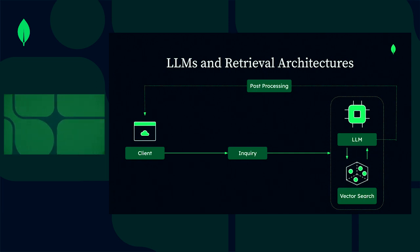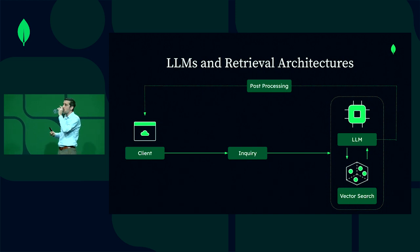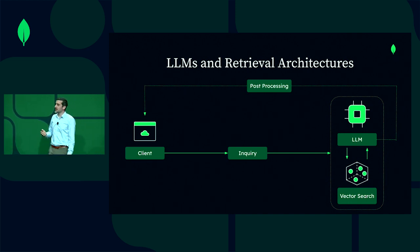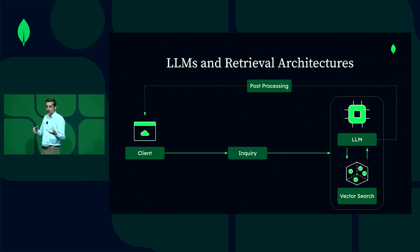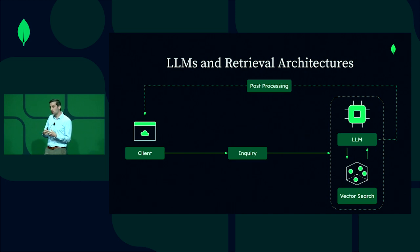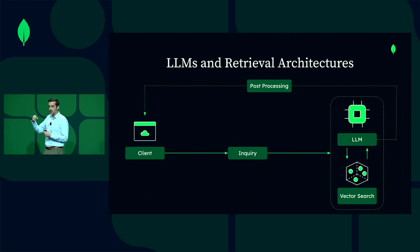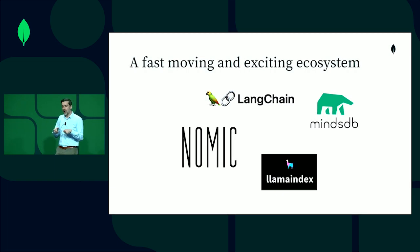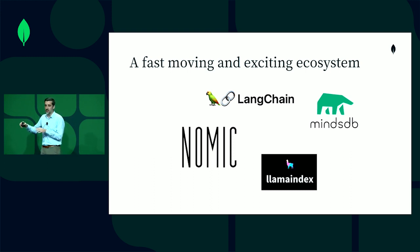With retrieval architectures: the client submits an inquiry. That gets processed by a framework, and the inquiry goes to the large language model. The large language model uses semantic search to pull out the relevant data from the database and then return it for post-processing and go back to the client. The way this is done frequently is using frameworks, and that's why I'm really excited to talk about some of our partners in this space who are making a lot of this possible.